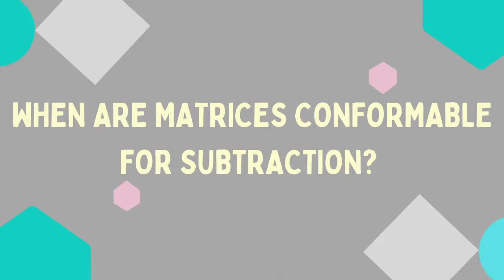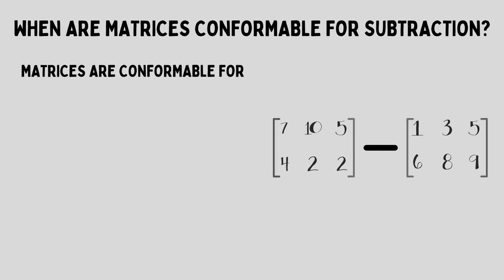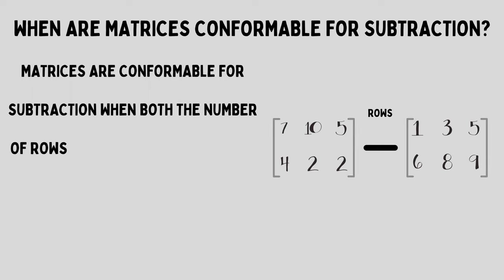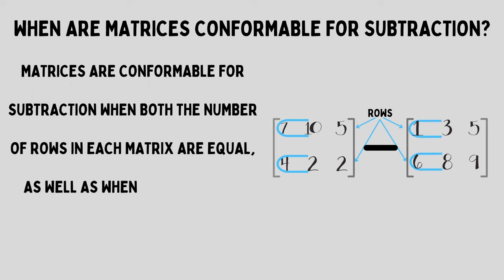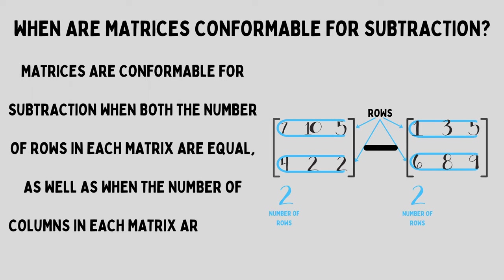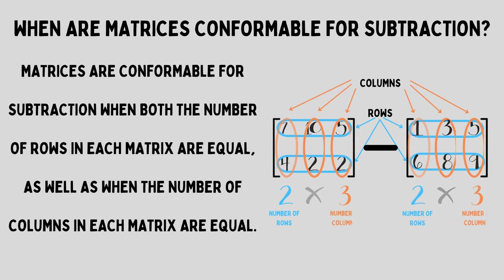Now when are matrices conformable for subtraction? Matrices are conformable for subtraction when both the number of rows in each matrix are equal as well as when the number of columns in each matrix are equal. So that means that just like addition, matrices that are being subtracted need to be of the same order, meaning they have the same number of rows and same number of columns. In this case, we have two rows and three columns for both matrices.